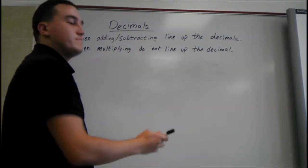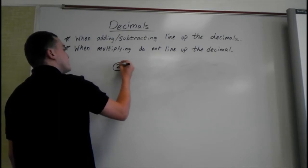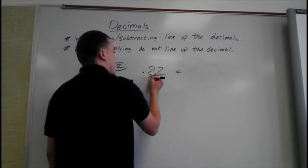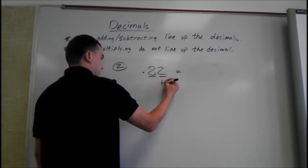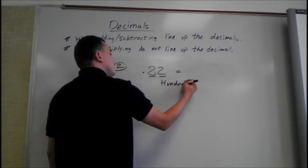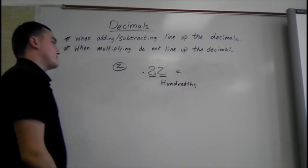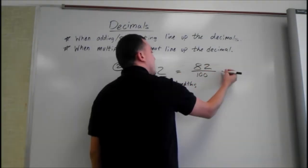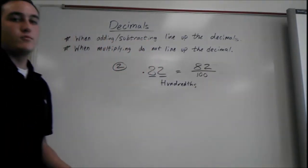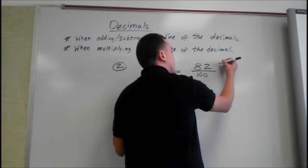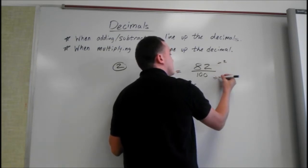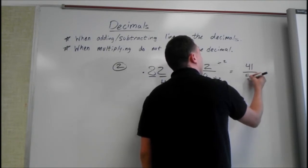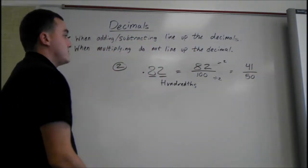Another example. We'd say 0.82. We know we're going to the hundredths place this time because it's two places. So we're going to have 82 over 100. And then we're going to reduce by what we know we can reduce by. We can divide by 2 for this one. So we get 41 over 50.